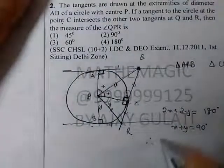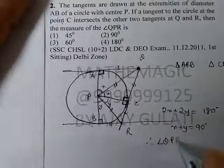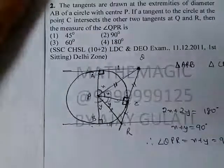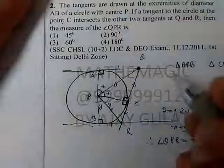Therefore, angle QPR is equal to x plus y is equal to 90 degrees.